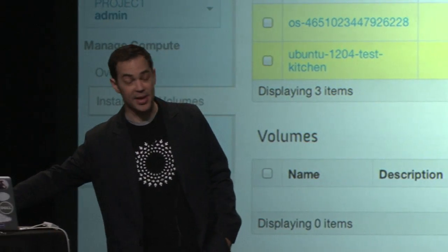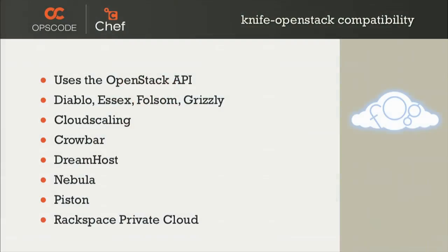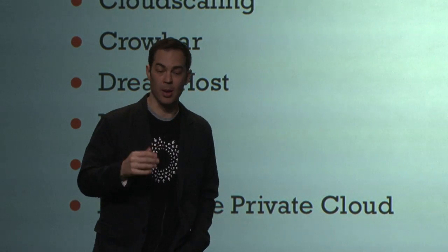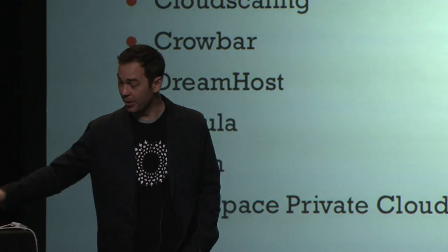There it is — it shows up in the dashboard. Knife OpenStack is compatible with just about every vendor out there. Most of the people providing OpenStack, we've worked with them or we're partnering with them. People may not be standing OpenStack up with Chef, but chances are very good they're going to be running their infrastructure on top of OpenStack with Chef — and that's why compatibility is important.